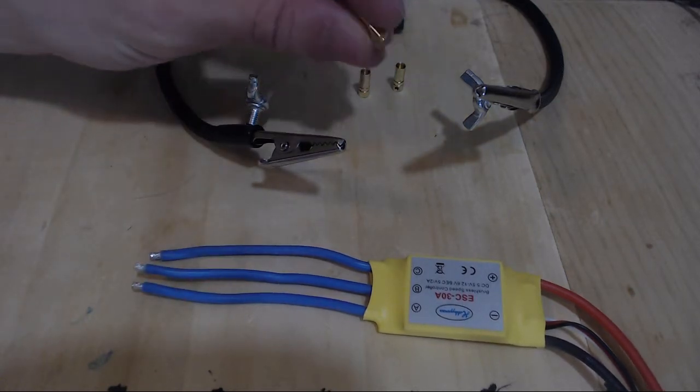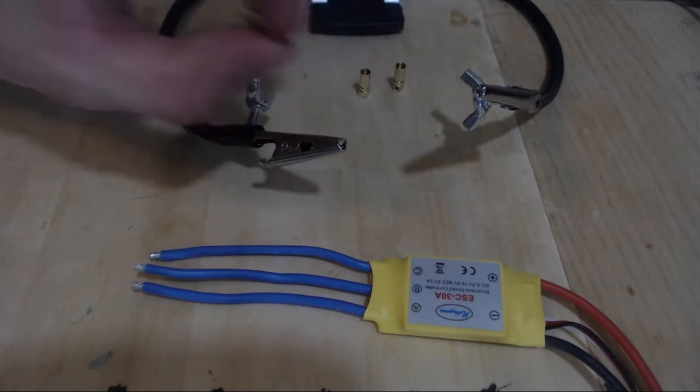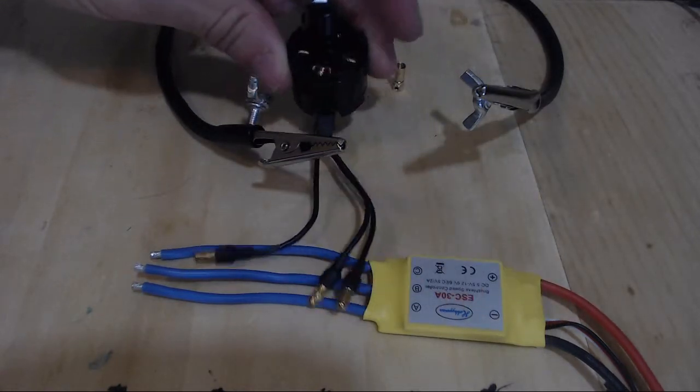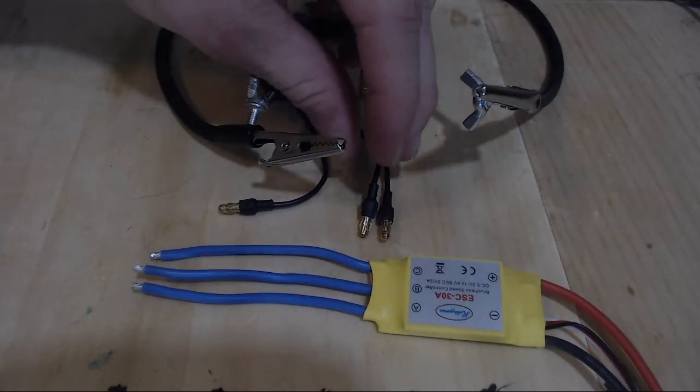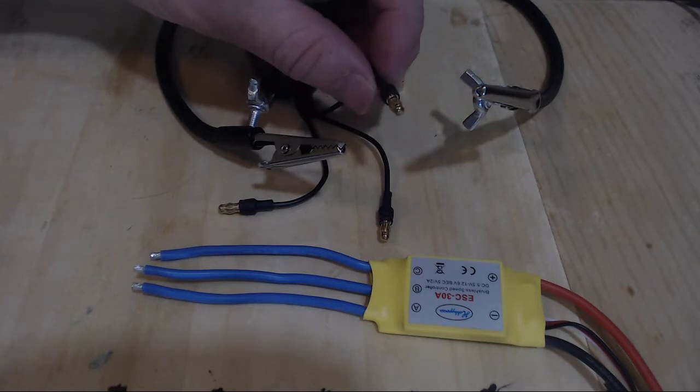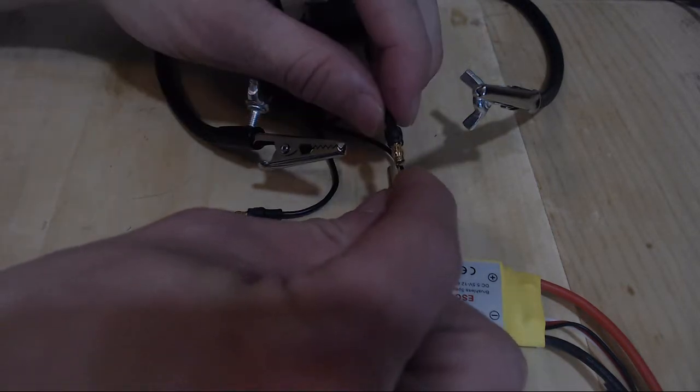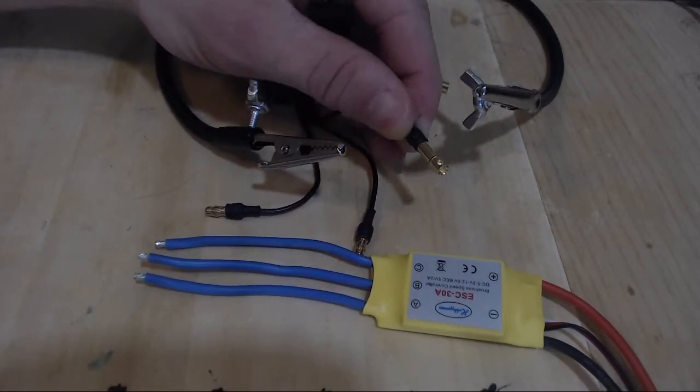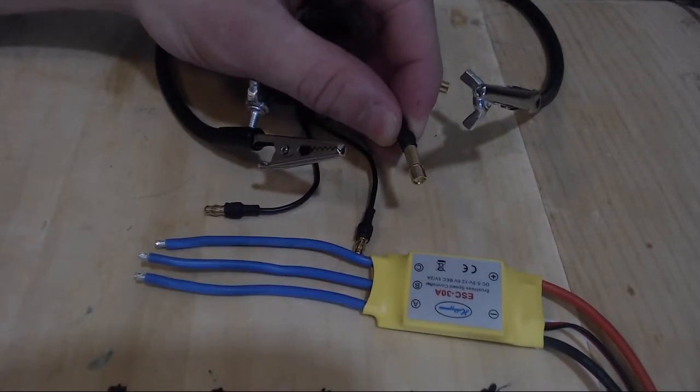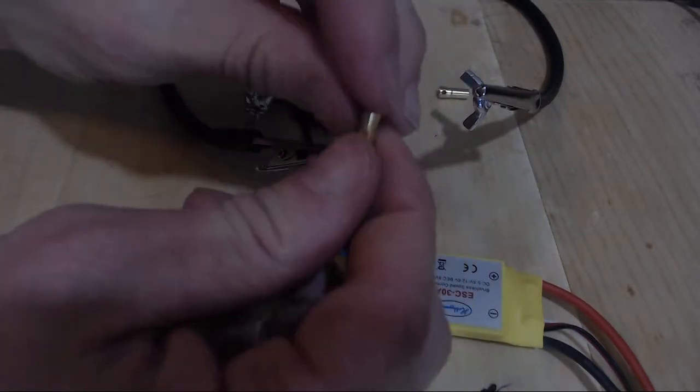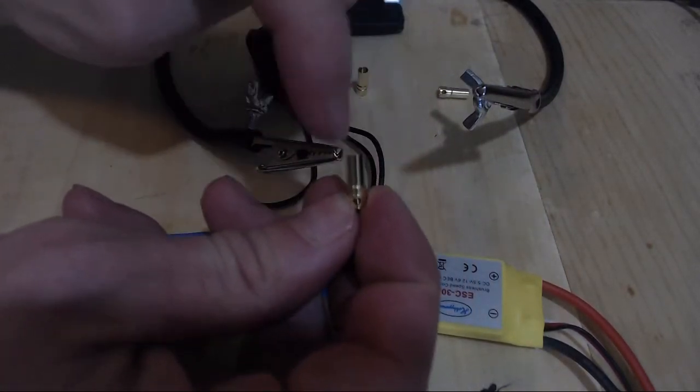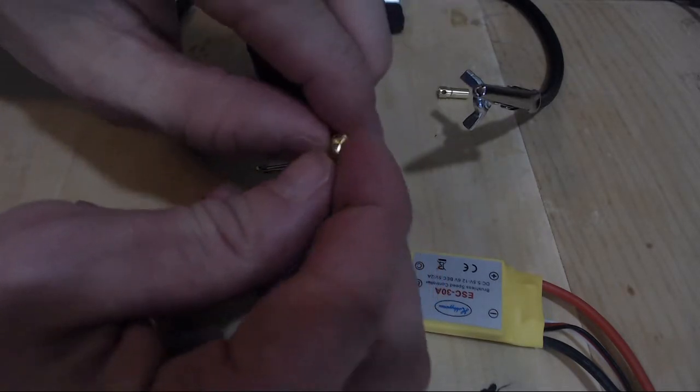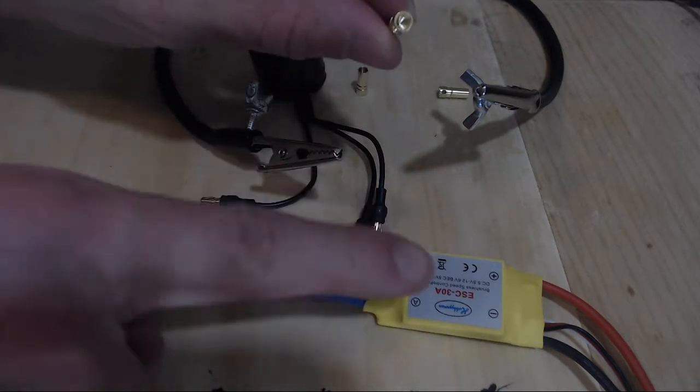Now these bullet connectors are female ends like I already said. And here's a quick demonstration of how they work. Here is our motor, and the motor already has connected the male ends of the bullet connectors. So the female bullet connectors will pressure fit into the male end bullet connector and that makes an electrical connection. So we have two sides of the female bullet connector: one pressure fits in with the male bullet connector and the other gets soldered to the ESC.